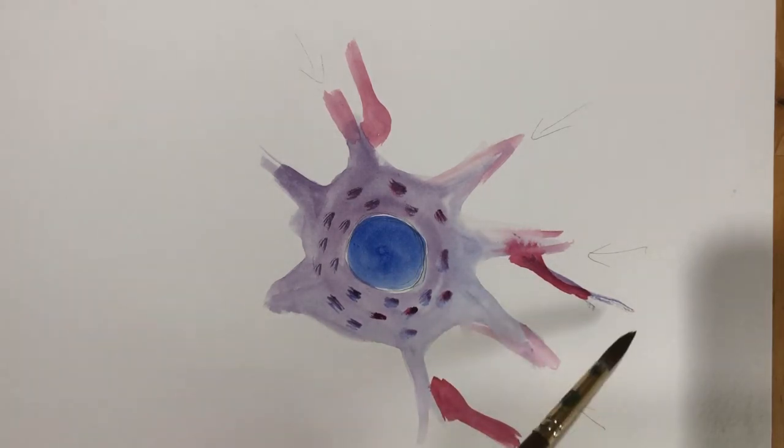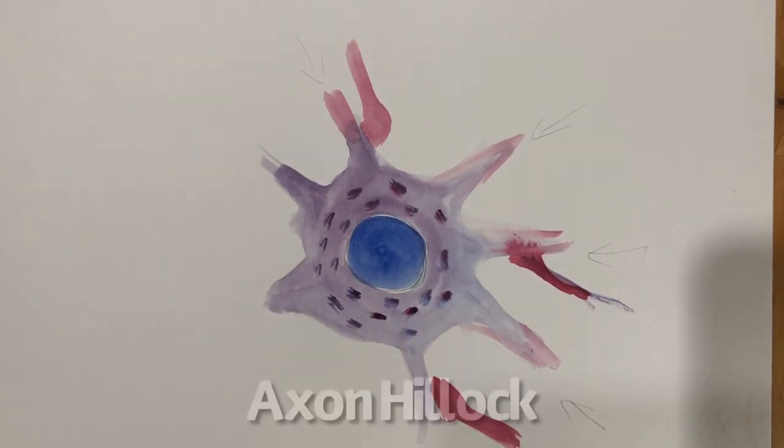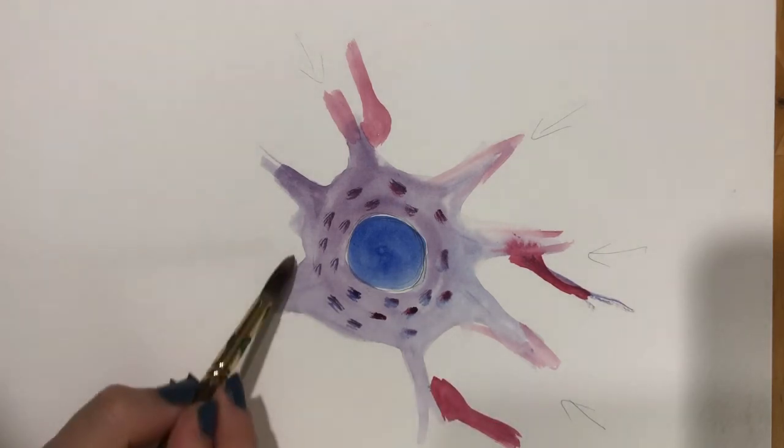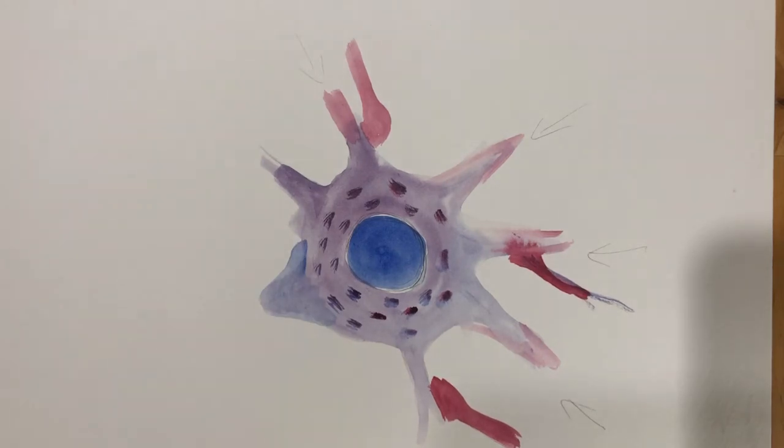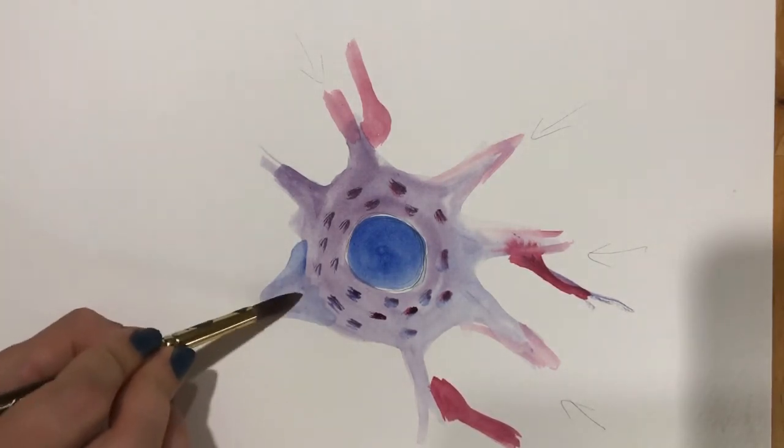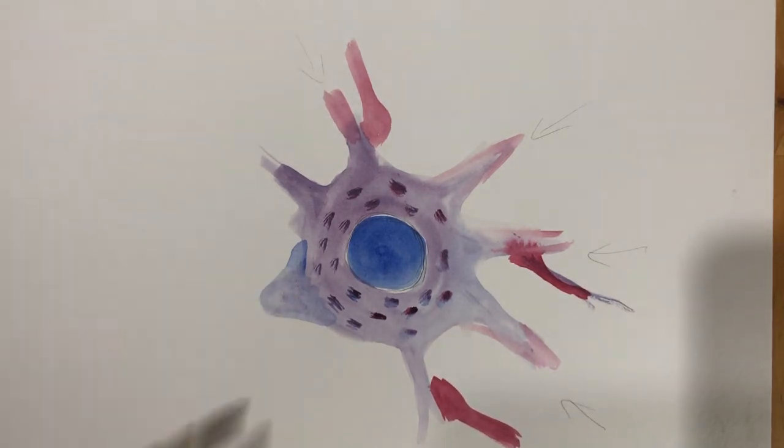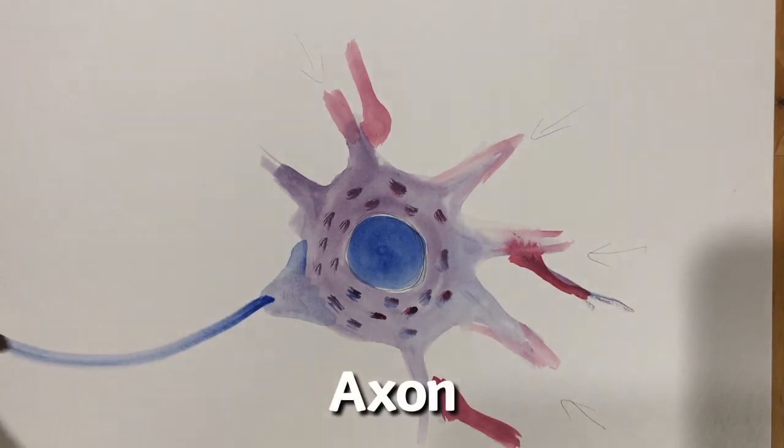Now when an impulse comes down the axon and goes into our neuron here, all of those impulses are going to gather together in what is called the axon hillock. Now the axon hillock, we'll paint it right here. If we get enough of these impulses, it's going to activate in the axon hillock. They've all gathered there. And it shoots off down the axon.